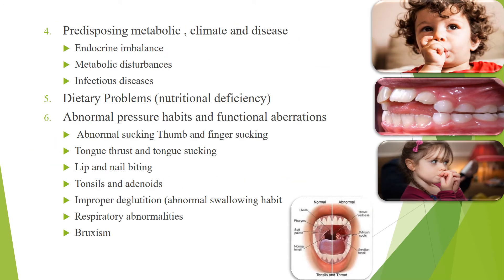Predisposing factors include metabolic climate and disease — such as endocrine imbalance, metabolic disturbances, and infectious diseases — and dietary problems like nutritional deficiency. Abnormal pressure habits and functional causes include abnormal sucking, thumb and finger sucking, tongue thrusting and tongue sucking, lip and nail biting, tonsils and adenoids, improper deglutition, respiratory abnormalities, and bruxism.